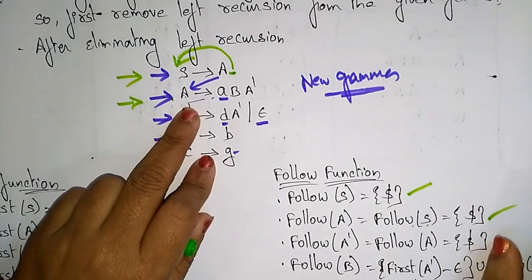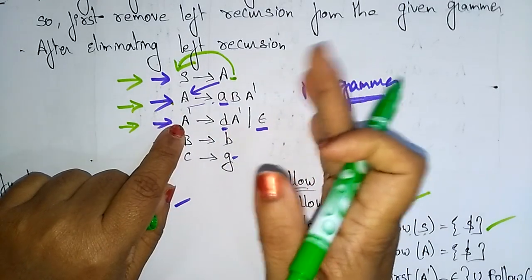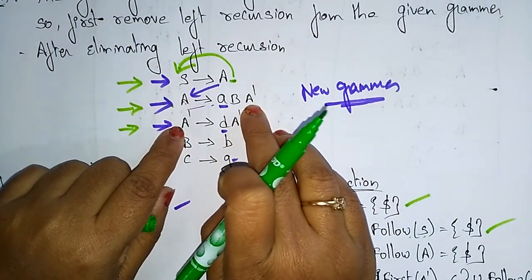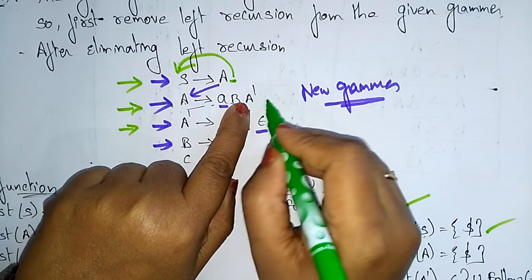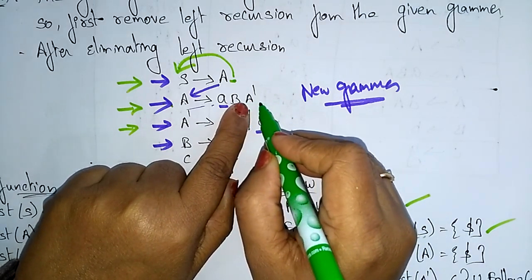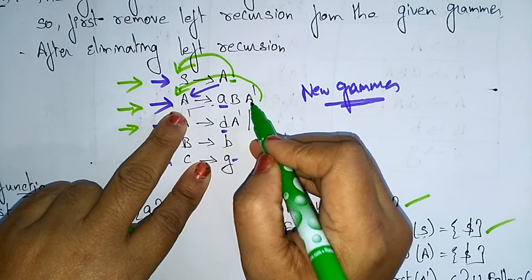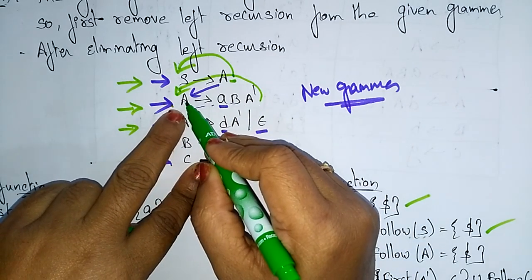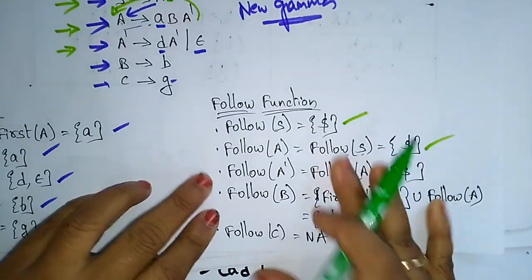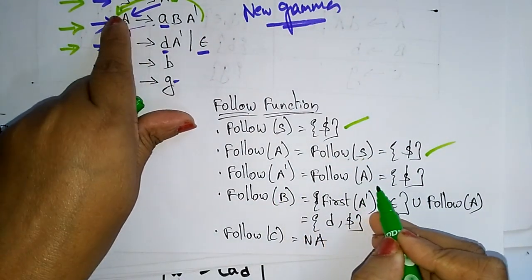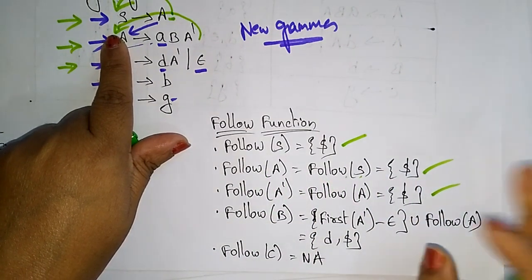For FOLLOW(A'): we check where A' appears on the right-hand side. In A → BA', A' is at the end with no symbol after it, so we shift to the left-hand side: FOLLOW(A') = FOLLOW(A) = {$}.